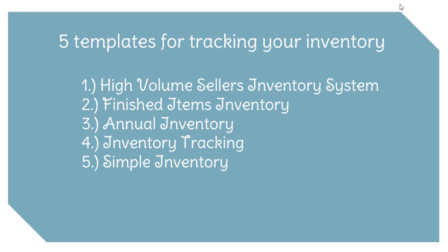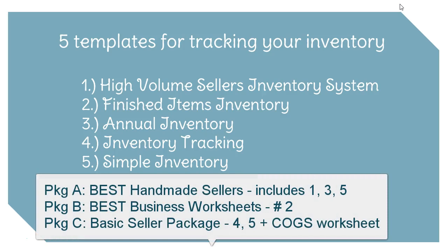That sums up the five main options I have for tracking your inventory. Hopefully that will help you get started getting organized. Also look out for the different package options — some templates come in packages at a bigger discount than buying individually. The High Volume System comes in the Best Seller Tool Package; the Annual Inventory is included in the Best Seller Package; and options four and five come in the Basic Seller Package. Check those out if you're also interested in sales and expenses tracking templates. Good luck with all your inventory tracking — I'm here to help you streamline your spreadsheets and get organized with these Excel templates.